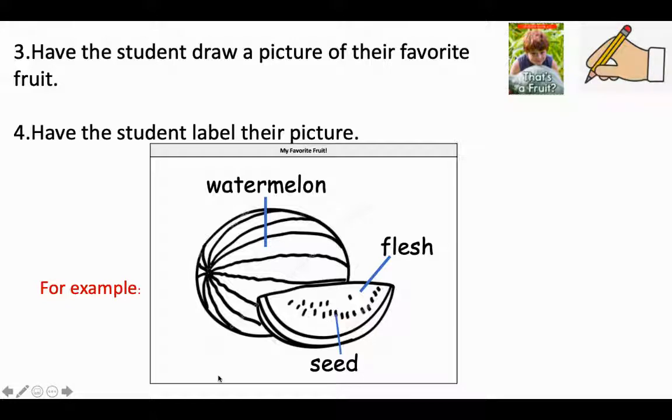When your kindergartner is labeling the picture, they might not know how to spell the word. That is okay. We teach them to sound out the word. We say, say the word slowly or stretch the word to listen to the sounds in the word.